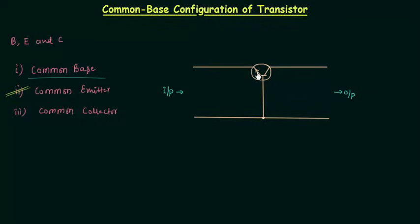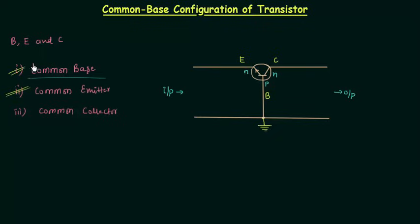If you see the direction of emitter current in the transistor symbol, you will find this transistor is an NPN transistor, in which this is the emitter, this is the collector, and this is the base. The base is common to the input circuit and the output circuit, and it is grounded in common base configuration.